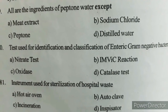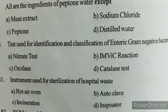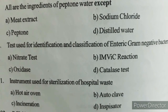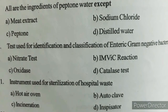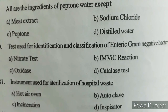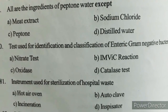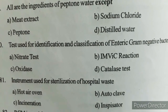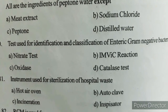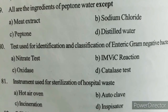Next question: The instrument used for sterilization of hospital waste is? Option A) Hot air oven, Option B) Autoclave, Option C) Incineration, Option D) Inspissator. Correct answer: Option C — Incineration.